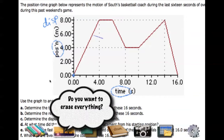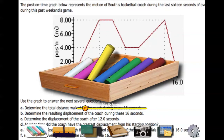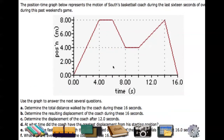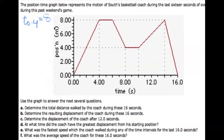The question asks: determine the total distance walked by the coach during these 16 seconds. Since it's a position-time graph we can take the distance from the corresponding values. For distance, direction is not of importance, so we'll simply be adding up the distances he moved — the length he covered. From zero to four he moved a distance of eight meters.